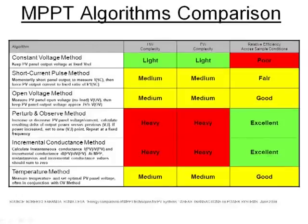So coming back to the MPPT algorithms — what are the different algorithms which can be used for tracking MPPT? We have various algorithms: the constant voltage algorithm, constant current algorithm, perturb and observe algorithm, or the incremental conductance algorithm. Out of these, the perturb and observe and the incremental conductance algorithms are the most efficient, and those are the ones implemented in this particular product.